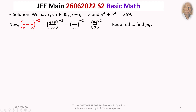Taking the LCM, we get LCM as PQ and the numerator is P plus Q. So it equals (P plus Q) over PQ, to the power of minus 2. Since P plus Q equals 3, this becomes (3/PQ) to the power of minus 2, which equals (PQ/3) squared. So we require the value of PQ.